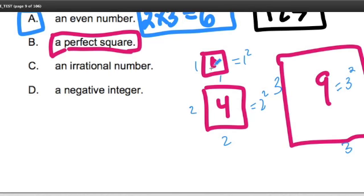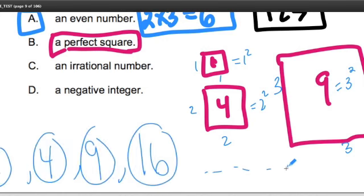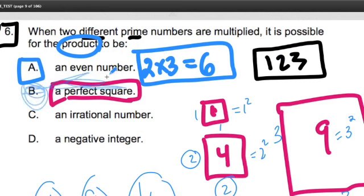A perfect square, we have 1, 4, 9, 16, and so on and so on. A perfect square is made up of 2 prime numbers squared. Okay. So then we have to ask yourself, is it possible to get an irrational number?